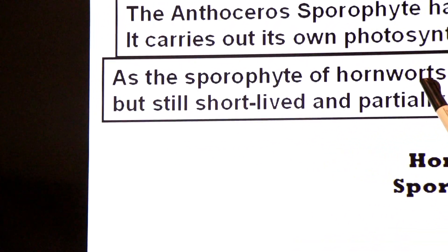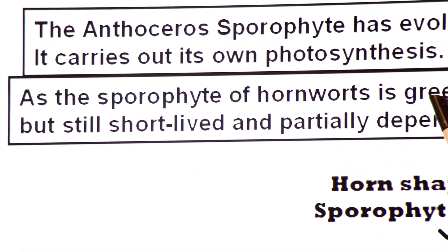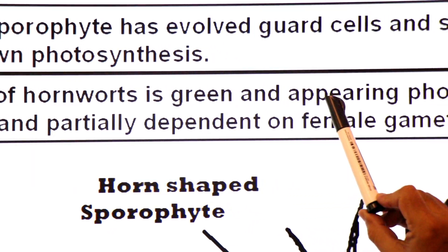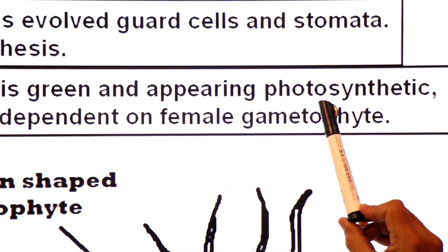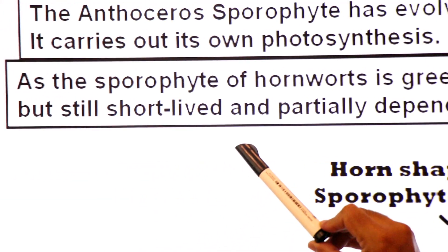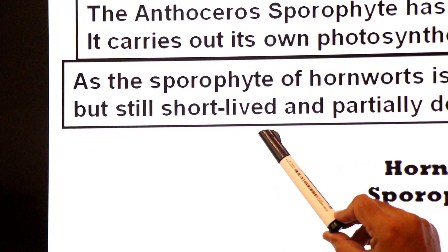As the sporophyte of hornworts is green and appears as a photosynthetic plant, it is still short-lived and only partially dependent on the female gametophyte — it is not fully independent.